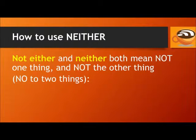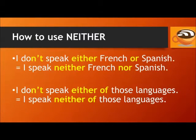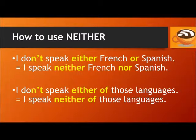Now let's look at neither. 'Not either' and 'neither' both mean not one thing and not the other thing. For example, 'I don't speak either French or Spanish' is the same as 'I speak neither French nor Spanish.' This means I don't speak French and I don't speak Spanish. You could also say 'I don't speak either of those languages' or 'I speak neither of those languages.'